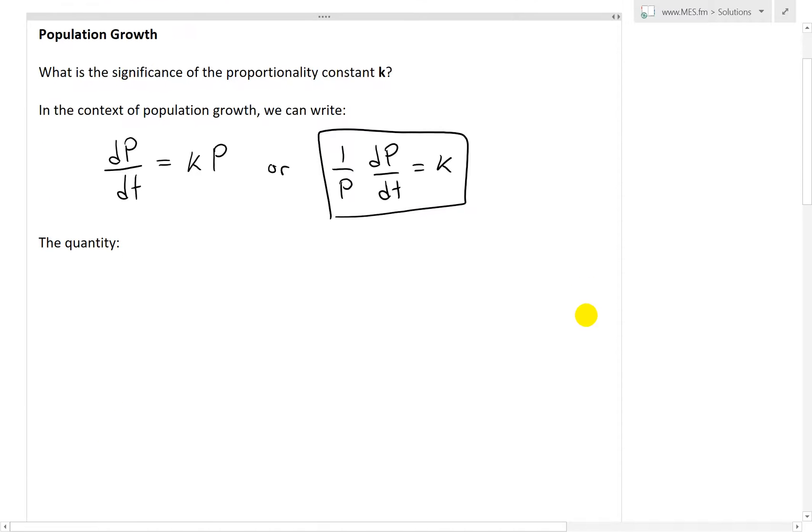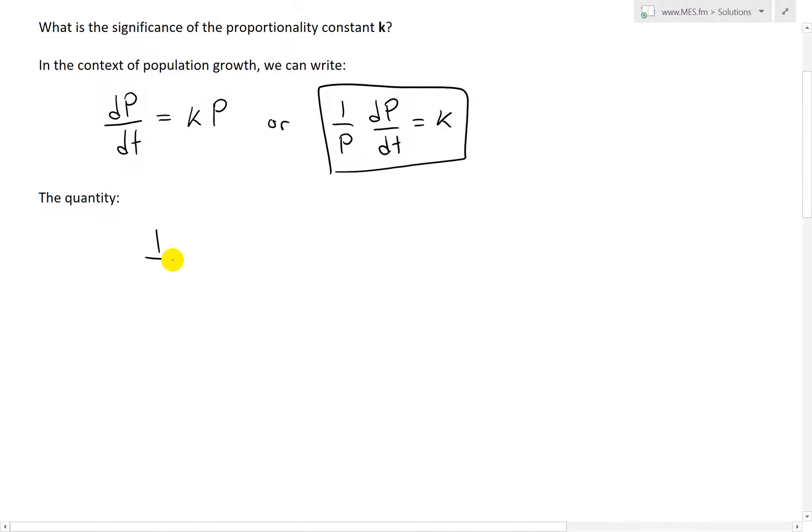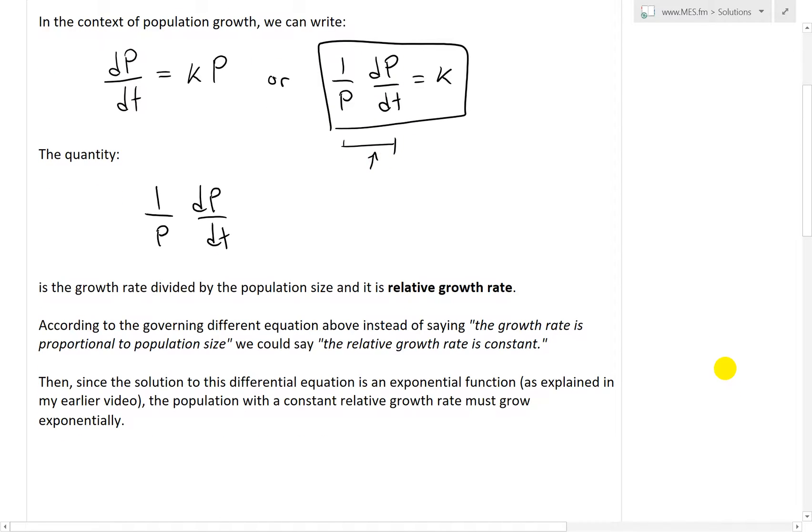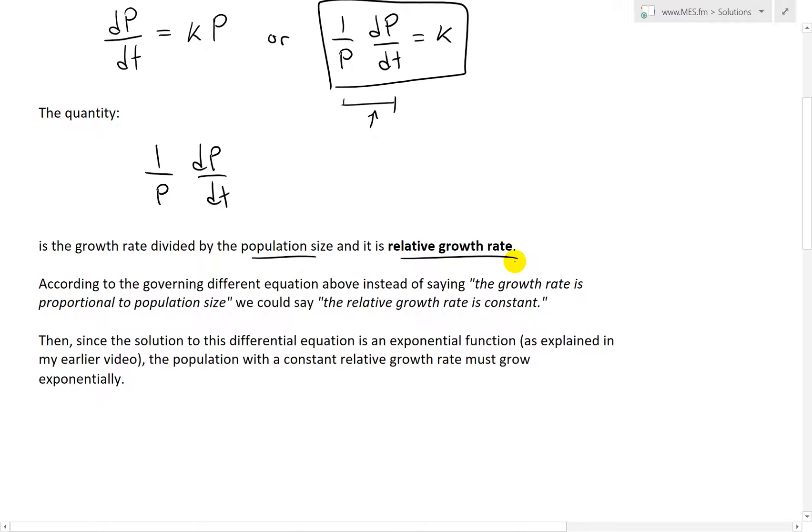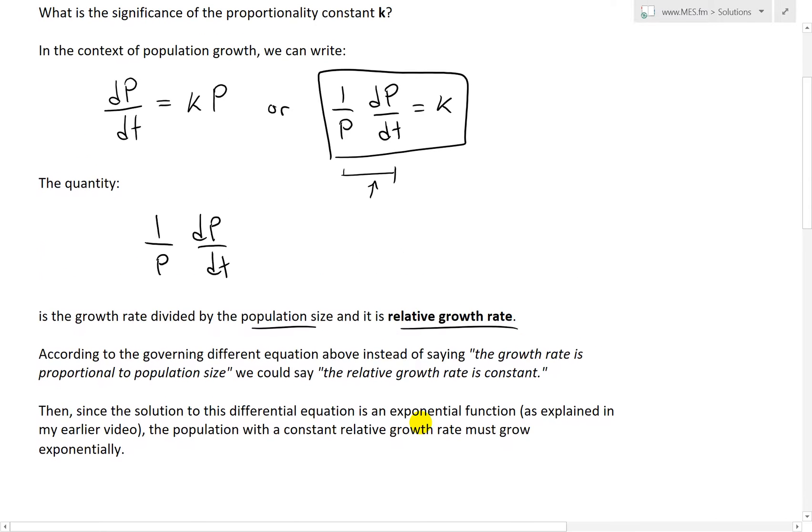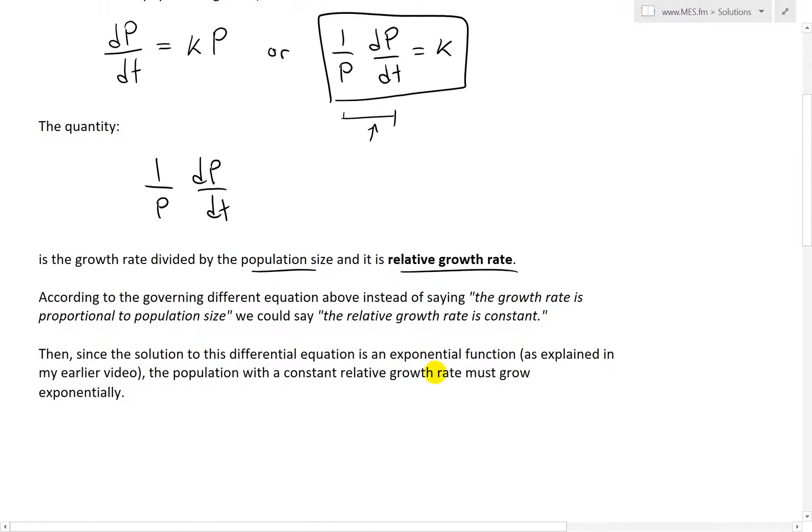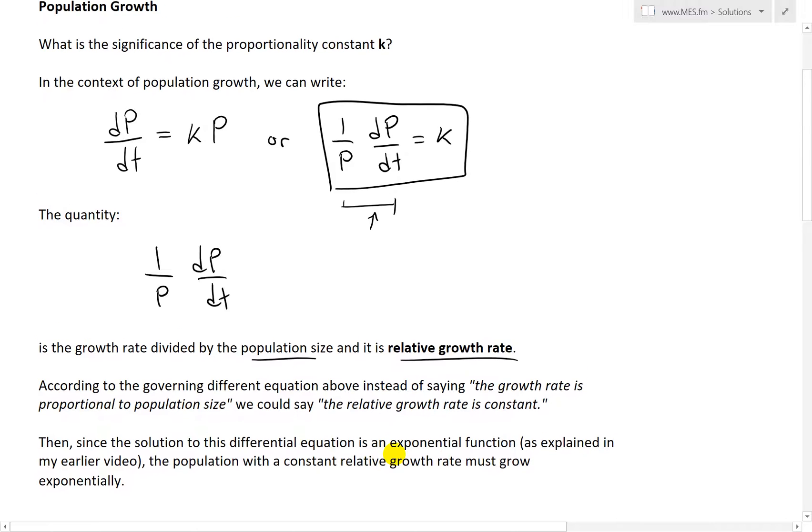And now the quantity, this one right here, the 1 over P dP/dt, that quantity is the growth rate, dP/dt divided by the population size. In other words, it is the relative growth rate. So this is actually a fraction or more of a percentage of the population growth because of this 1 over P right there.